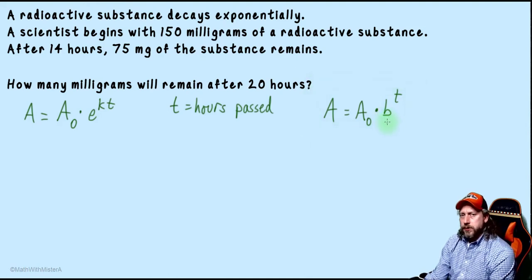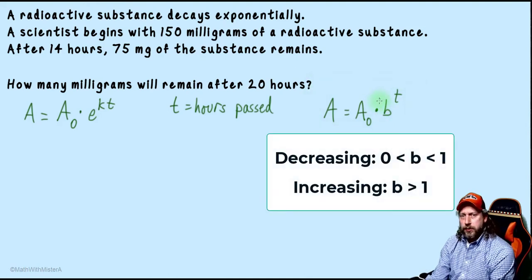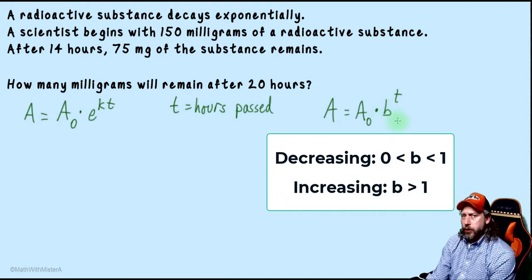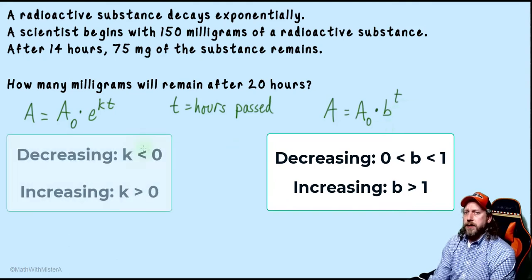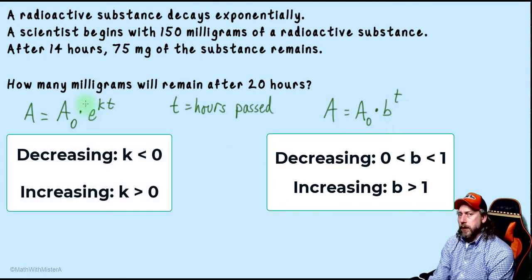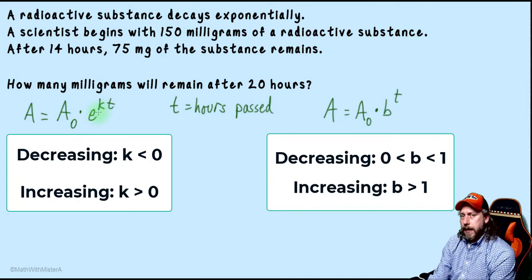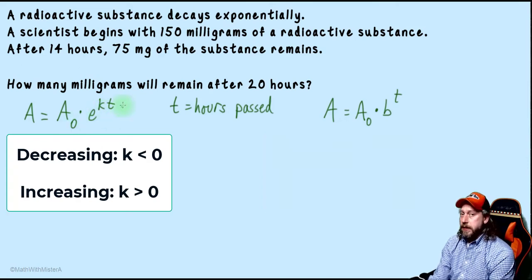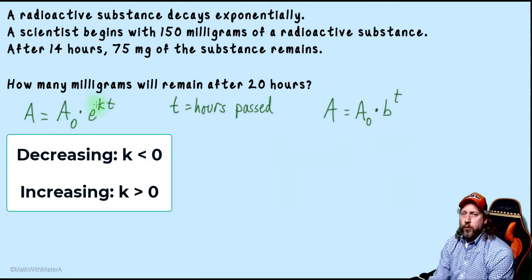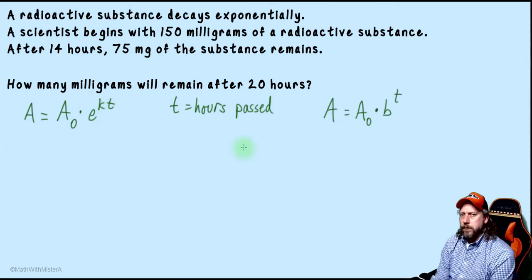t is still time, so this represents how frequently we multiply by b. b is what we're multiplying to create this decrease, so it's going to be some sort of decimal or fraction. If we have exponential growth, then b would be a number greater than one. That aspect of increasing and decreasing shows up in our first model in the rate k. It's positive when we have an increasing model and it's negative when we have a decreasing model.